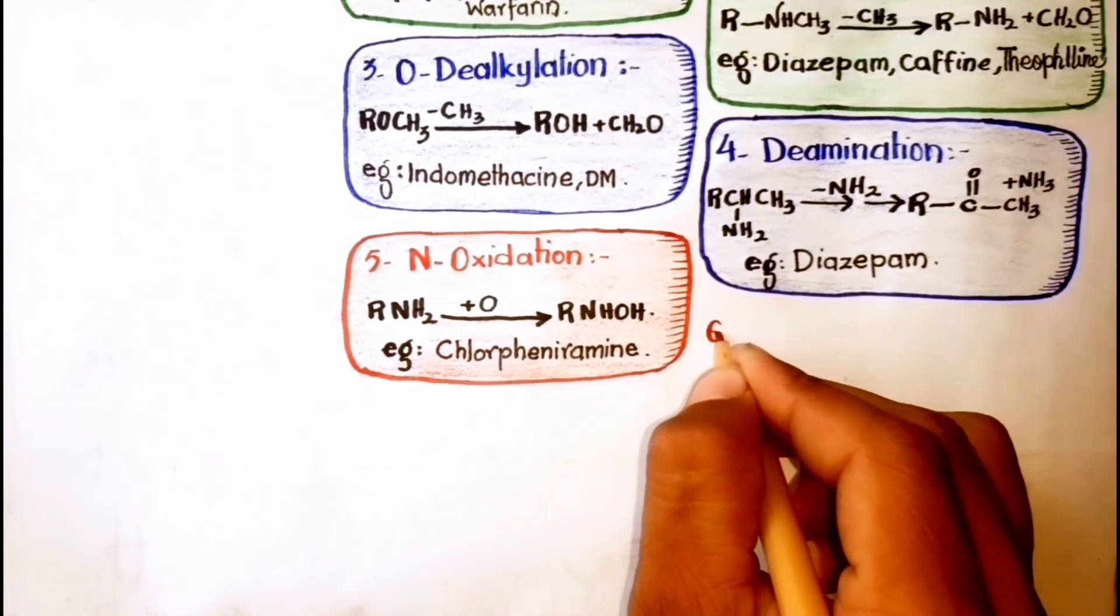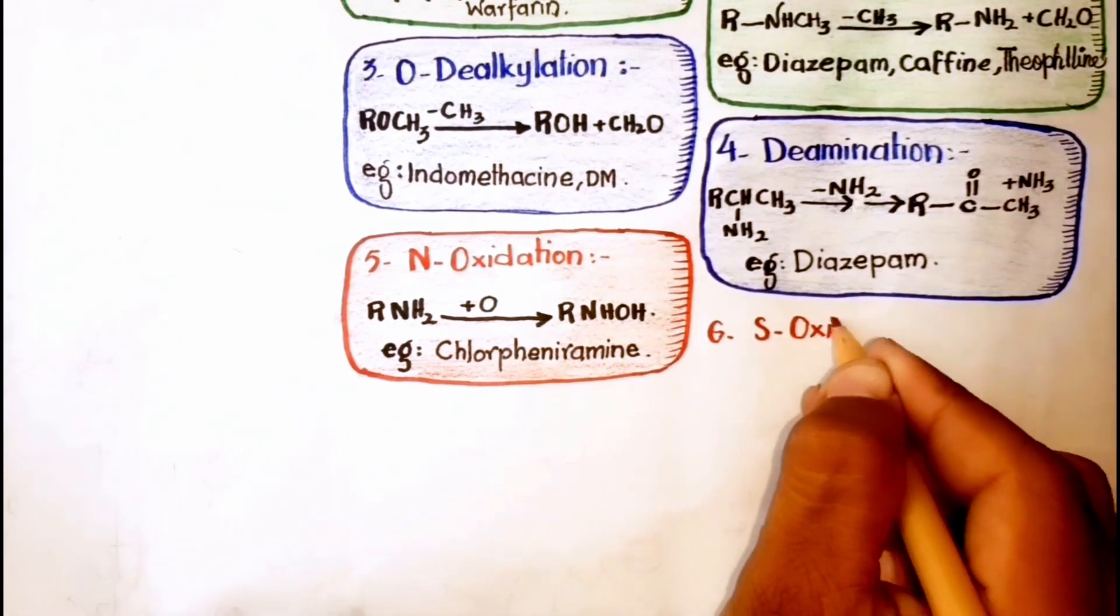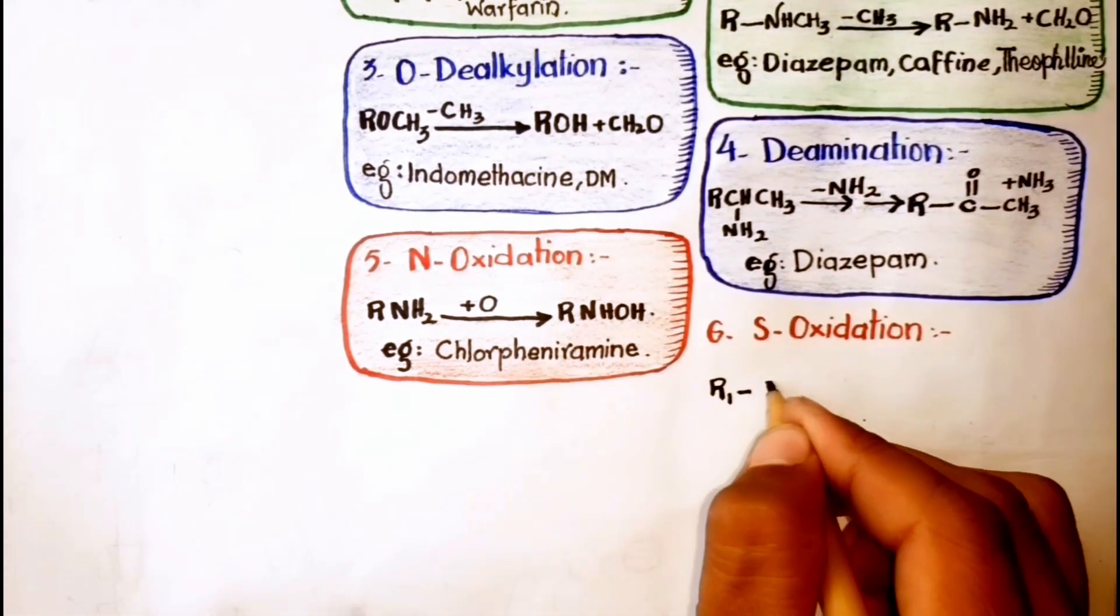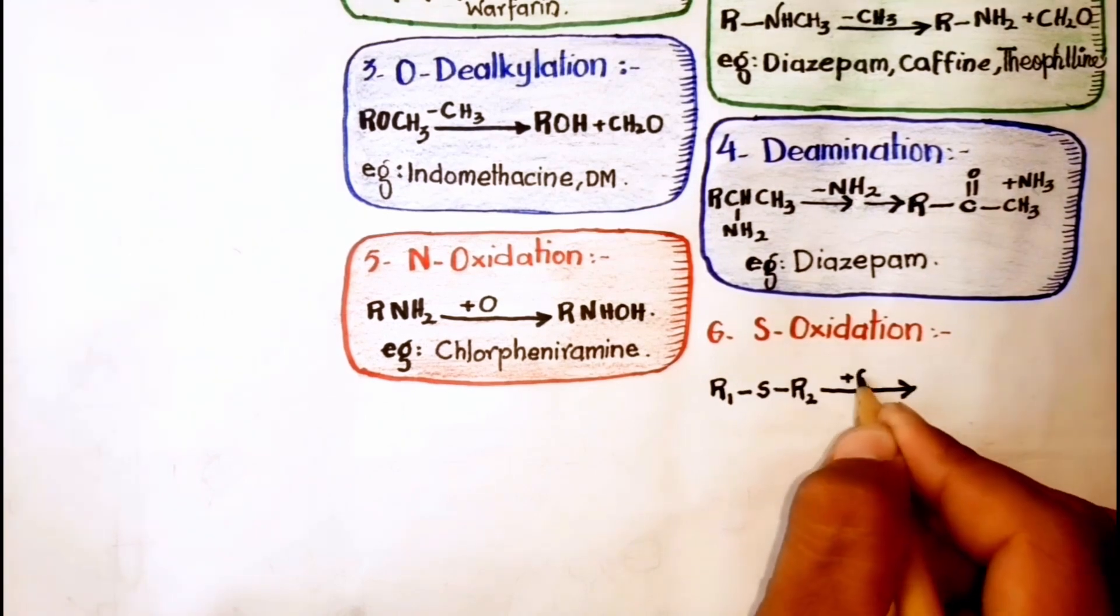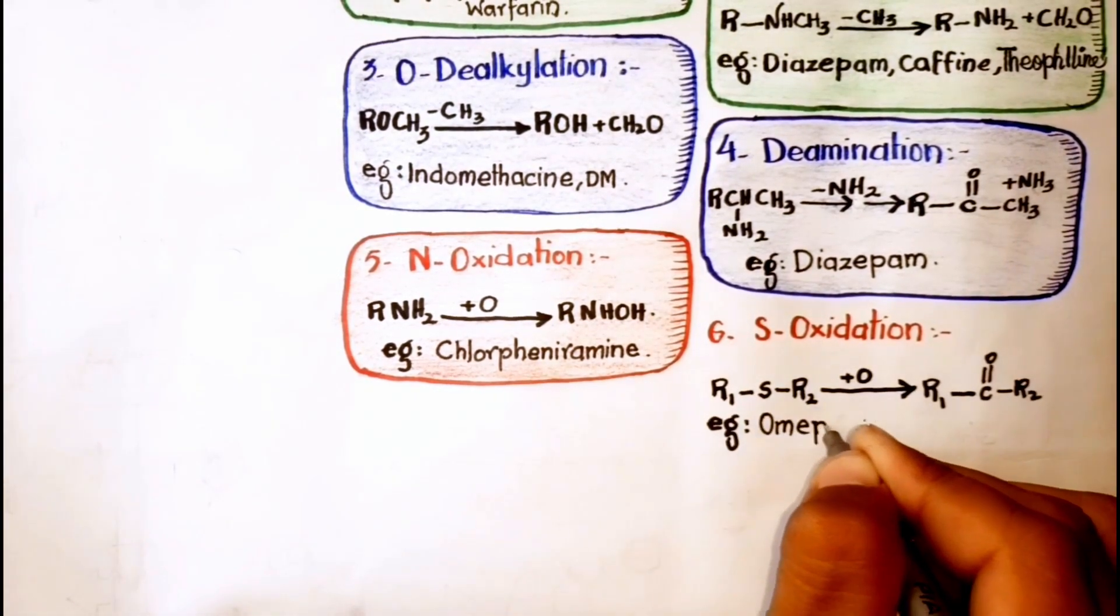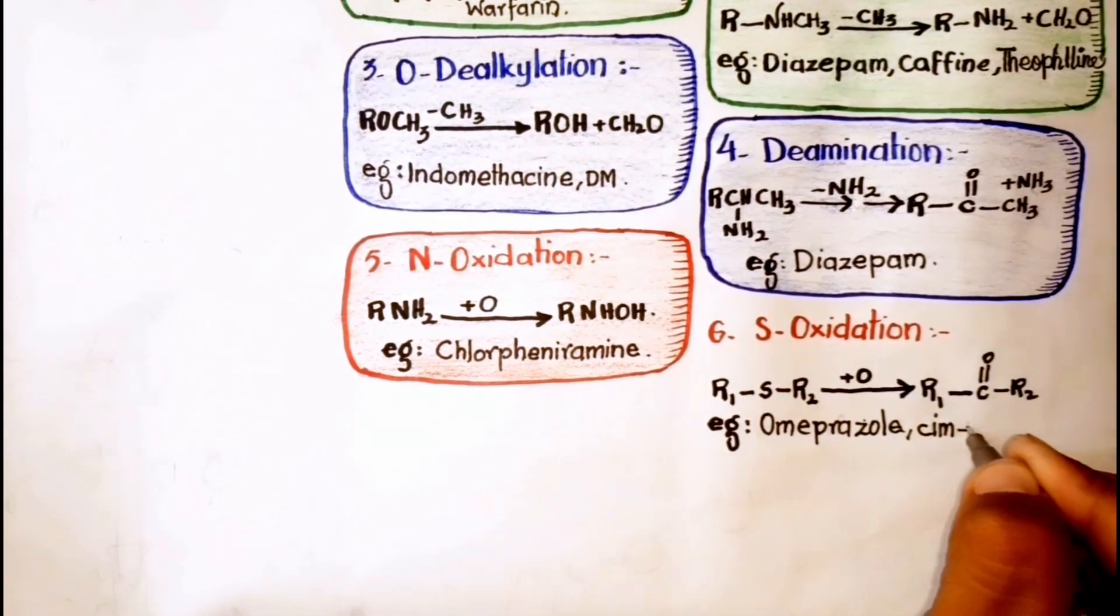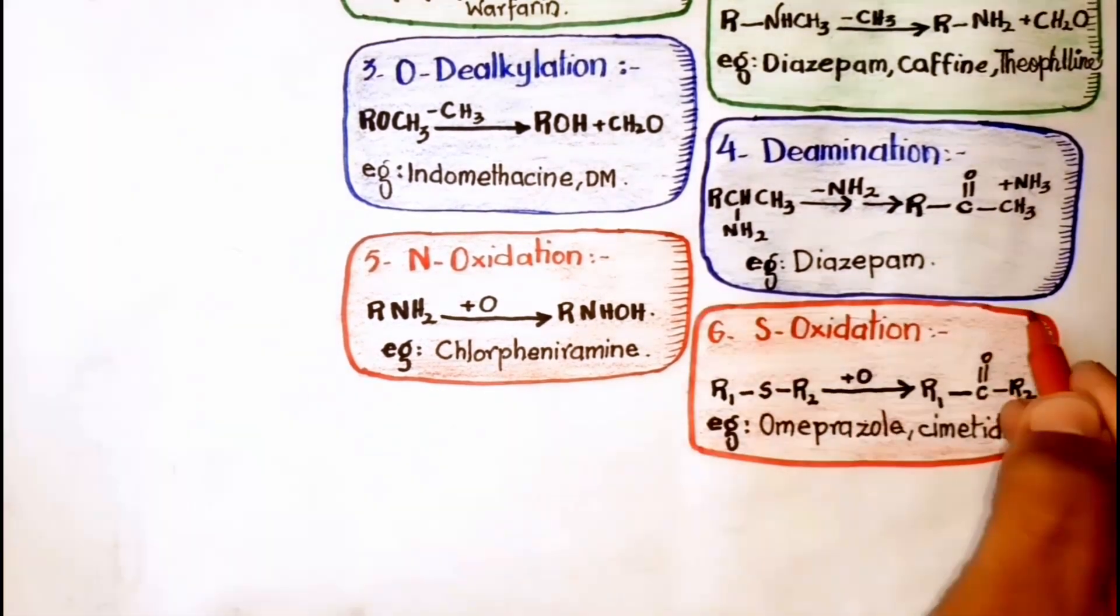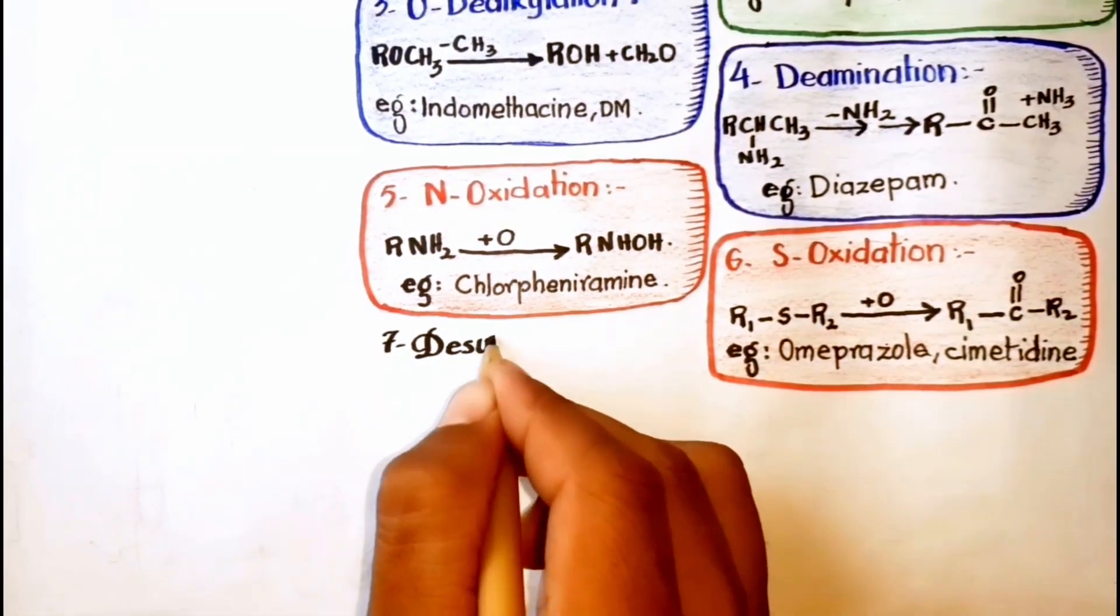Next is S-oxidation, oxidation reactions involving sulfur atom in a drug molecule. For example, omeprazole and cimetidine.